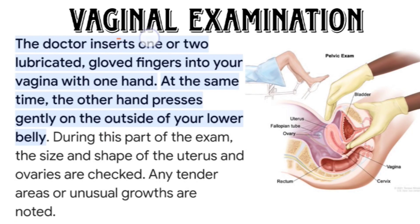Vaginal examination is of two types: the first is during labor, and the second is after labor. After giving birth, the mother comes for regular checkup and at that time vaginal examination is performed — that is the second type. We will discuss the second type first and then the first type, which is during labor.